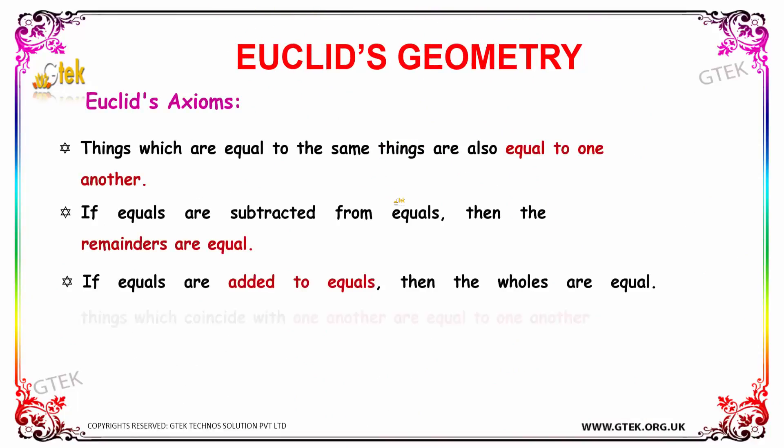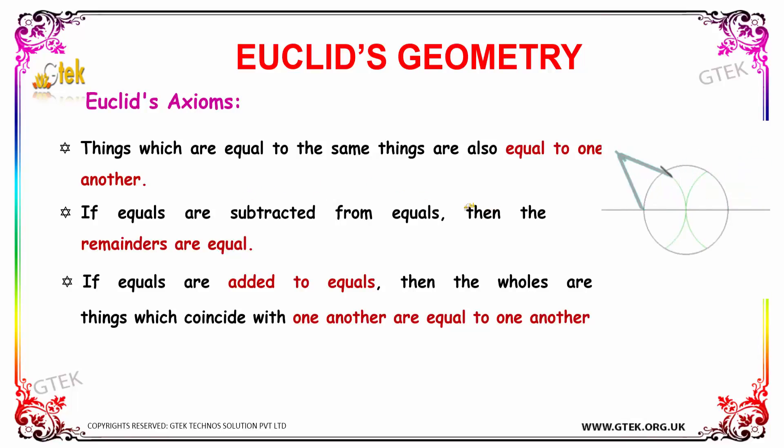Now let's discuss Euclid's axioms. Things which are equal to the same things are also equal to one another. So this is the point which we must have in mind in terms of Euclid's axioms.